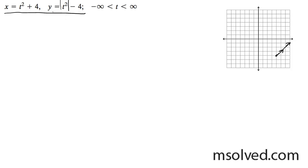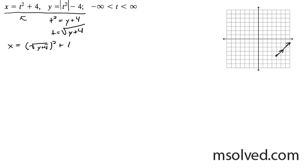Substituting in for y: t squared is equal to y plus four, so t is equal to the square root of y plus four. Substituting that into our x equation, we get x equals the square root of y plus four, squared, plus four. That simplifies to x equals y plus four plus four, so x equals y plus eight. This is our equation, and our graph is over there.